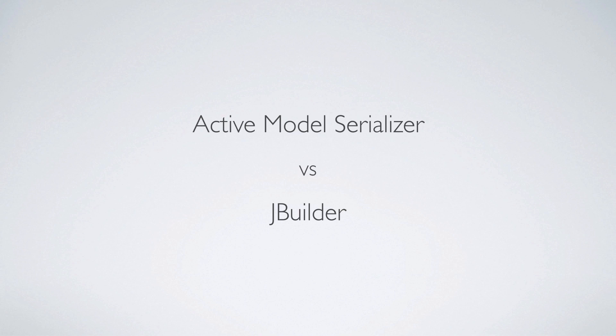The two main options are Active Model Serializer and JBuilder. With Active Model Serializer, it separates its serialization concerns into a separate folder and separate files that will render out the JSON, whereas JBuilder is more like a view extension where you would have your HTML files as well as the JBuilder extension files. JBuilder is a pretty good implementation.